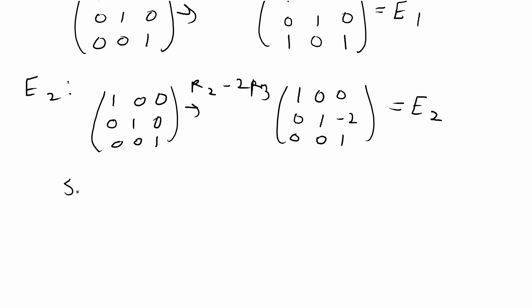That gives us E1 and E2 such that A pre-multiplied by E1 and then E2 is equal to B, and we're done with this problem.